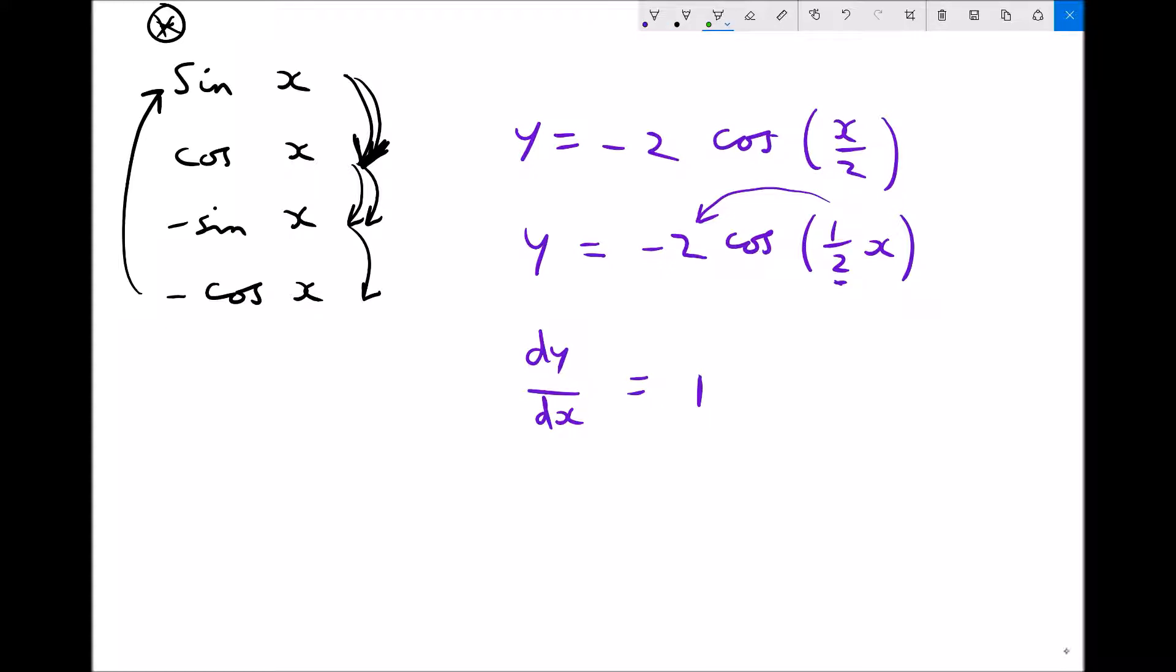And what we actually have here is we have a minus cos function. A minus cos function is going to become a sine function. Remember, because we said this was a cycle. So instead of minus 2 cos a half x, we're going to end up with 1 sine a half x.